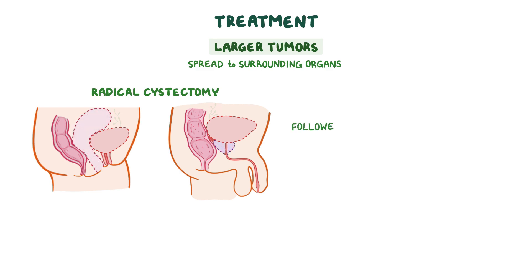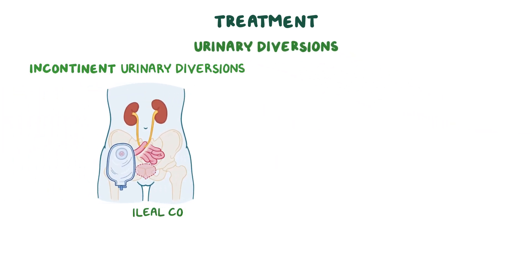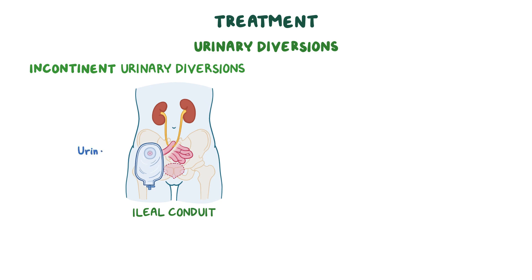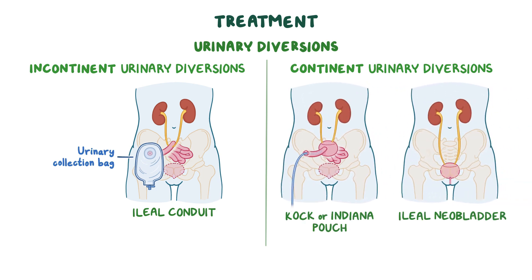Radical cystectomy is typically followed by urinary diversions, which create alternative pathways for urine elimination. An incontinent urinary diversion such as an ileal conduit connects to a urinary collection bag outside the body. Continent urinary diversions, like a Kock or Indiana pouch or ileal neobladder, create an internal storage pouch from small intestine. The Kock or Indiana pouch uses a valve through which the client inserts a catheter to drain the pouch, while a neobladder is connected to the urethra, allowing the client to void by relaxing pelvic floor muscles and bearing down with abdominal muscles.